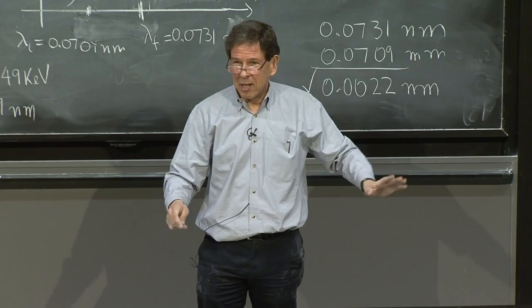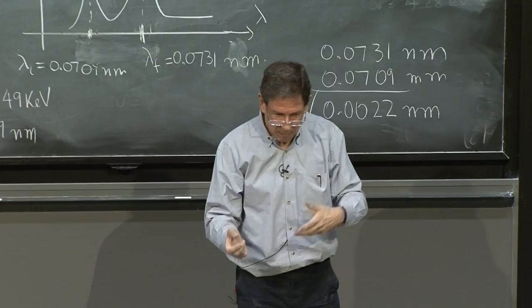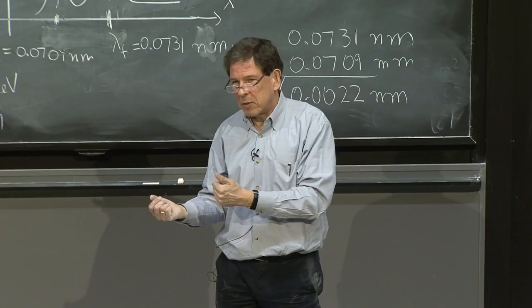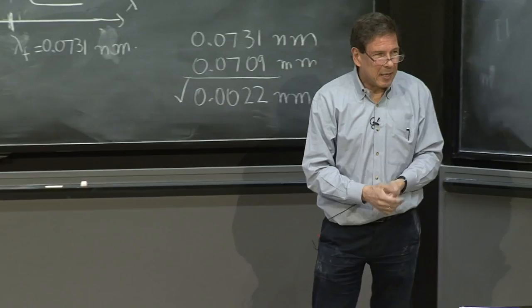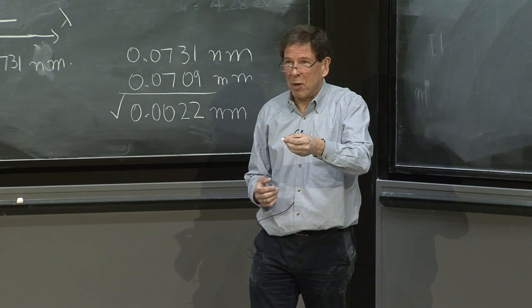So de Broglie says, just like the photons have properties of particles and properties of waves, every particle has properties of waves as well. And every wave has a property of particles. But what is left unsaid here is, yes, you have a wave, but the wave of what? And we've already told you a little bit, the answer has to do with probability waves.